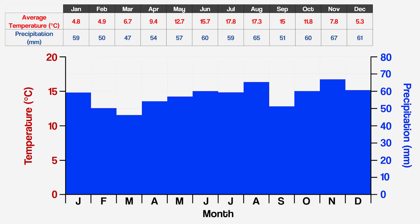Now for the temperature. Temperature is plotted as a line graph, usually in red. January averages 4.8 degrees Celsius. Just like before, it's important to make sure we line it up with the correct y-axis. Then we put a little dot or a cross in the middle of the January section. Then we do the same for February which is 4.9, March which is 6.7, and for the rest of the months of the year. Now that's done, we'll just join it all up with a curved line.